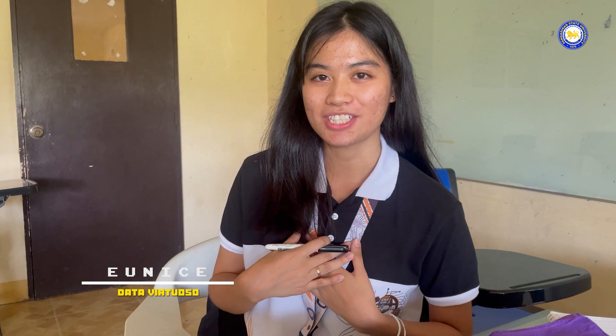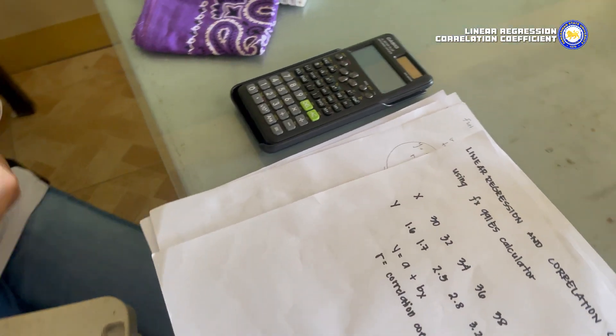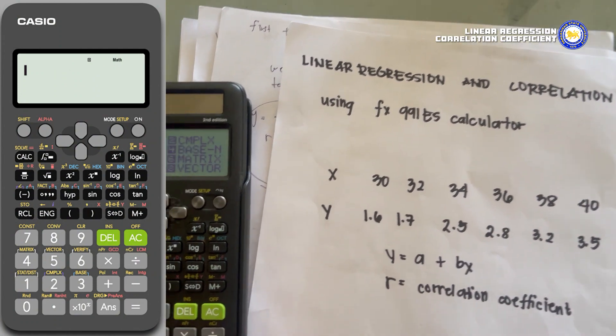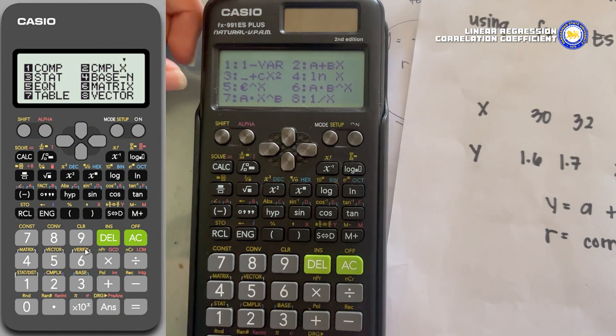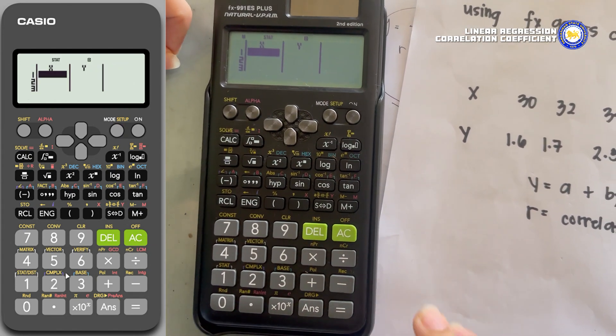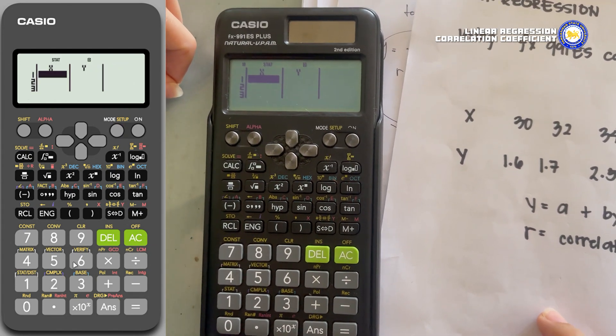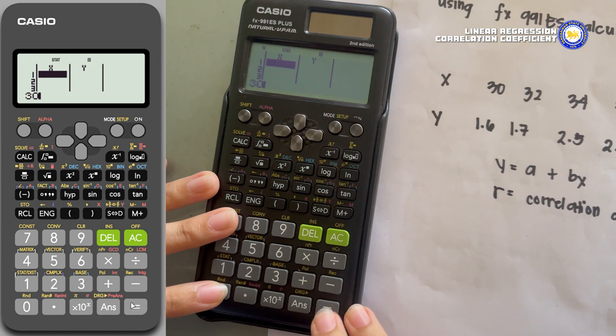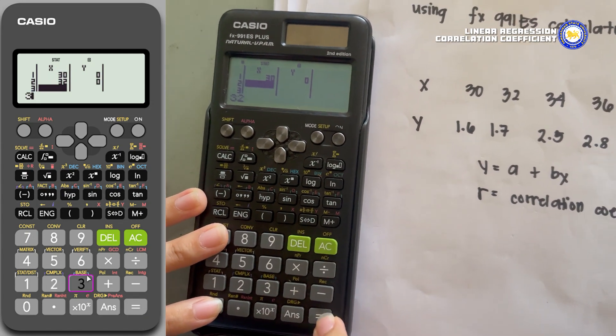Hello world, I'm Eunice and I will be teaching you how to solve linear regression and correlation coefficient. This method is used in engineering to determine the relationship between two properties. For our example, the first thing we have to do is go to Stat mode, and choose a plus bx since that is the regression mode. We now have to put our given x and y values in the table, pressing the equal sign to add each one. So 30, 32, 34, 36, 38, and 40.